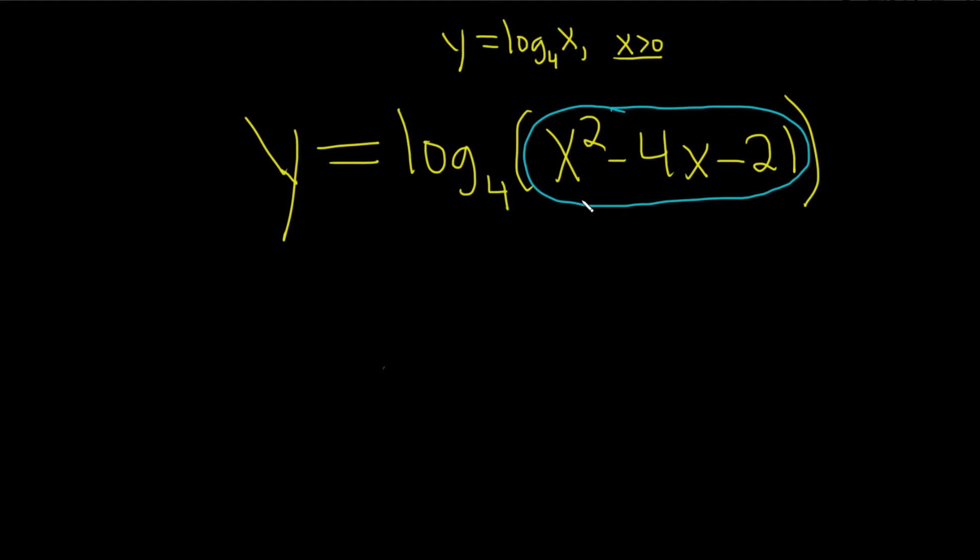So whenever you're finding the domain of a log, the very first step is you take this entire thing and you just set it greater than 0. So x squared minus 4x minus 21 greater than 0. That is step 1.